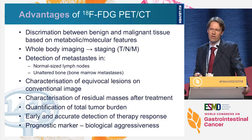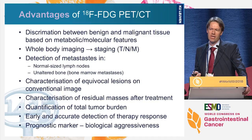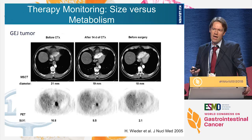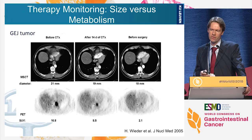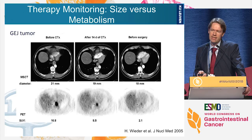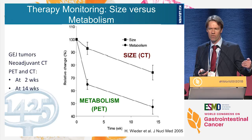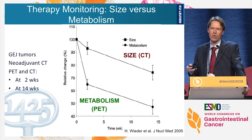We can quantify the total tumor burden within a patient and accurately detect therapy responses. FDG also serves as a prognostic marker as its uptake correlates with biological aggressiveness. Early data show a gastroesophageal junction tumor treated with chemotherapy where metabolic activity decreases at two weeks and 14 weeks, while the change on CT is not as apparent at the two-week time point — PET is earlier in detecting therapy-induced changes.